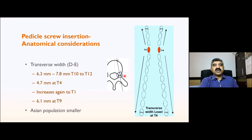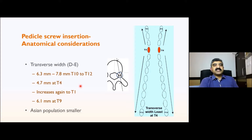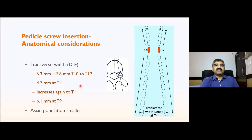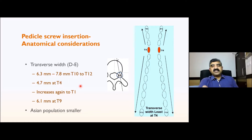We should know how thick a screw we can use. The thinnest pedicle in the thoracic spine is at T4, around 4.7 millimeters. The widest is at T12, around 7.8 millimeters. The commonest screws used in the thoracic spine up to T10 will be 6.5 mm; above T10 it will be 5.5 mm, and at T4 you can still use a 5.5 mm screw carefully. The Asian population has slightly smaller pedicle width than the Caucasian.